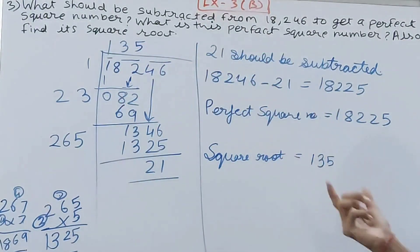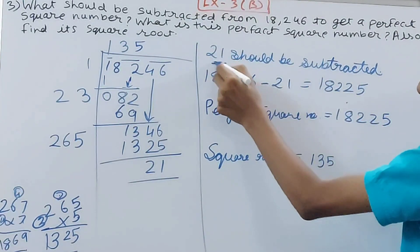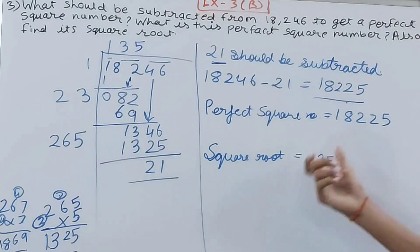Whatever quotient we have got, that only will become the square root. So this becomes your answer. First one, that is the number to be subtracted, is 21. Then 18,225 is the new number, and its square root is 135.